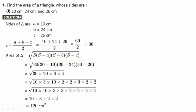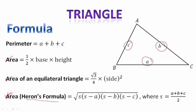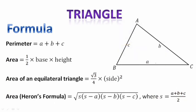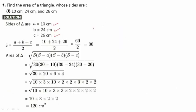One side is 10 centimeter, another side is 24, and another side is 26 centimeter. We need to find something called S — S stands for semi-perimeter, which is A plus B plus C divided by 2, as shown on the earlier slide. So semi-perimeter will be 10 plus 24 plus 26 divided by 2, which gives us 60 by 2, which is 30. So the value of S is 30.